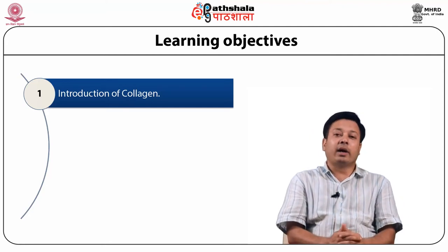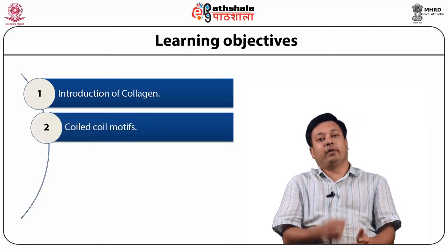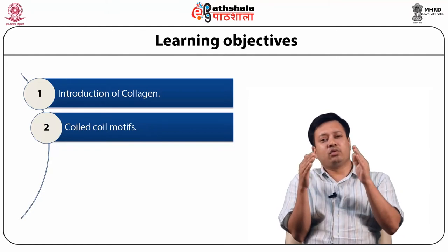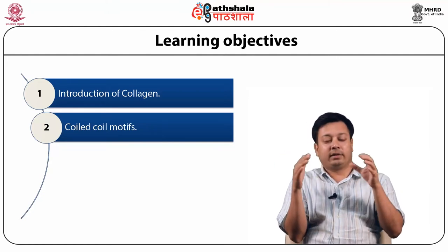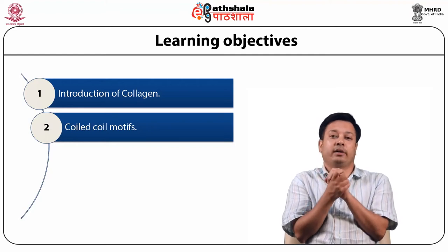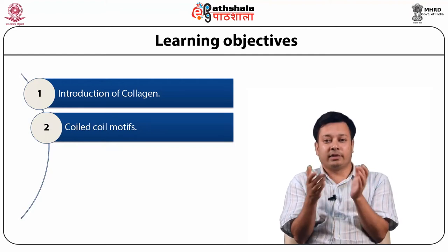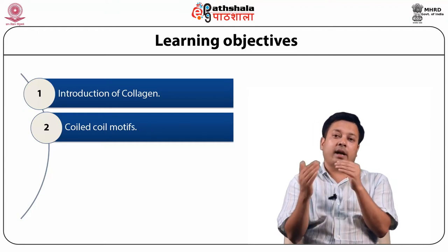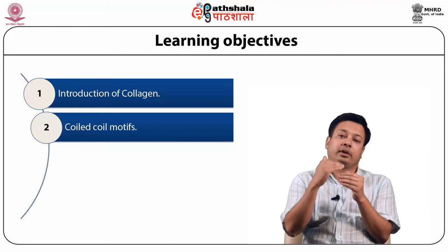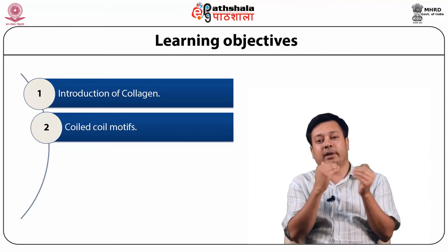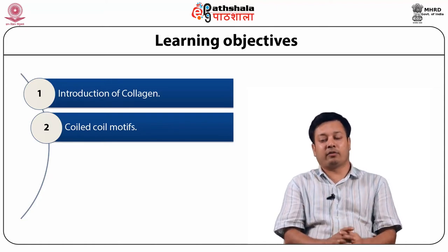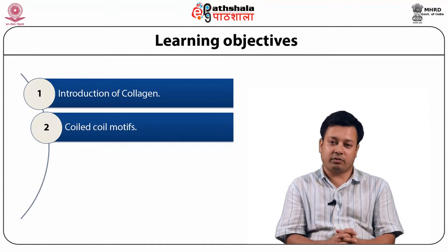Next, we will look at the coiled coil motif. When two or more helices come together and coil together, they form a coiled coil motif, which is a superhelix. After that, we will look into the comparison of both collagen and coiled coil superhelix — the difference in terms of fiber formation and other nanostructure formation.